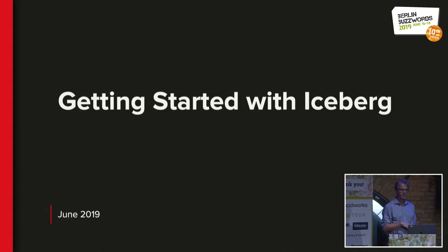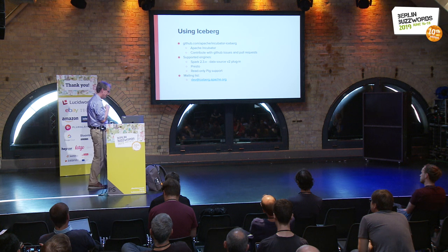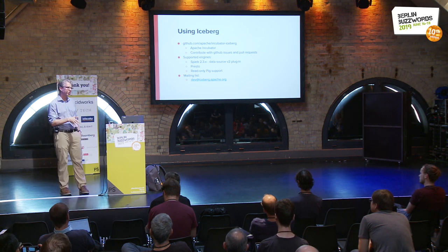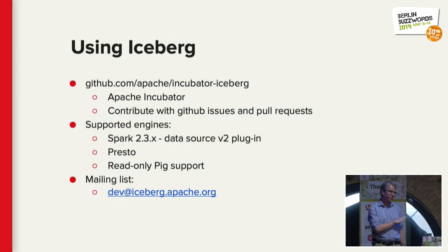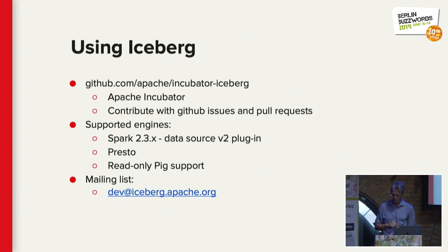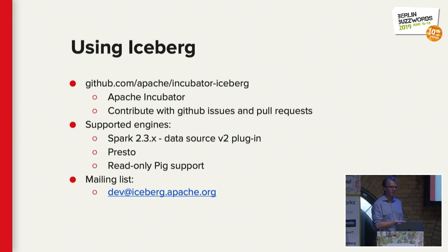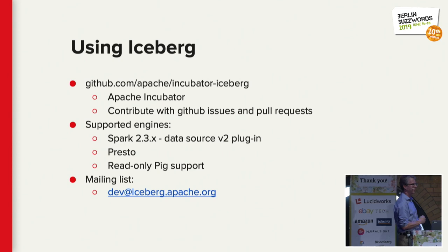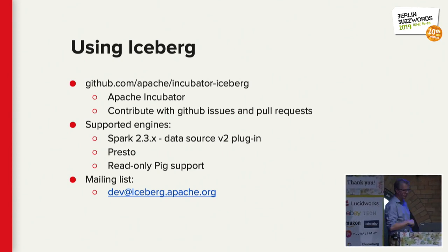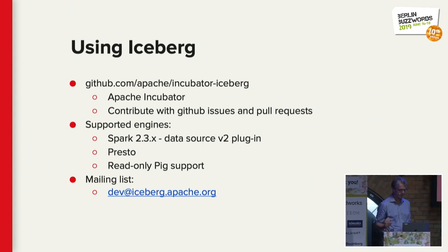How do you get started with Iceberg? About six months ago at the beginning of the year, I talked the Netflix guys into contributing it to Apache. It is now an Apache podling. You can go to the Apache Incubator and pick up the code. You contribute just like any other Apache project, complete with GitHub issues and pull requests. It has been great having Apache support GitHub issues and pull requests — going back to Hive and dealing with JIRA is painful. The supported engines are Spark, Presto, and someone did read-only support for Pig. You can go to the dev list and ask questions.